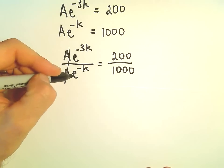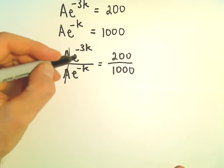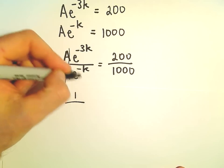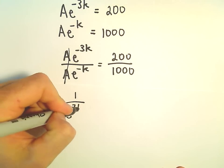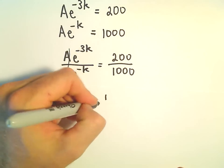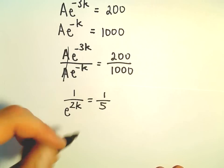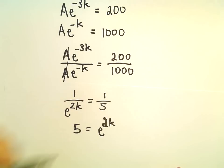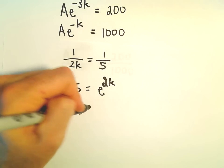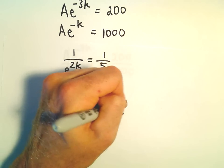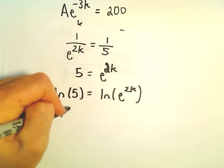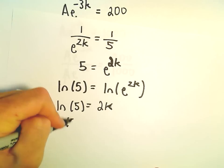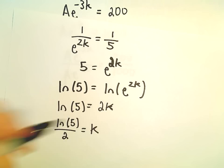We're left with E to the negative 3K over E to the negative K. We can rewrite that — putting E to the negative 3K in the denominator makes it E to the positive 3K — giving us E to the 2K. So 200 over 1,000 reduces to one fifth. Multiplying the 5 over and taking the natural logarithm of both sides, the natural log of E to the 2K gives us 2K. So K equals the natural logarithm of 5 over 2.